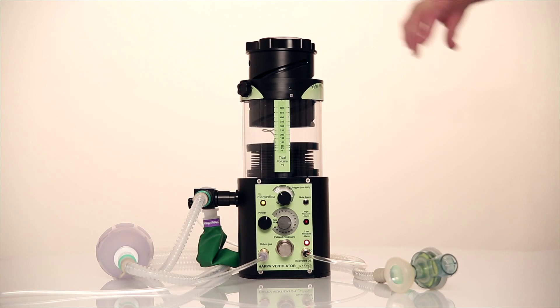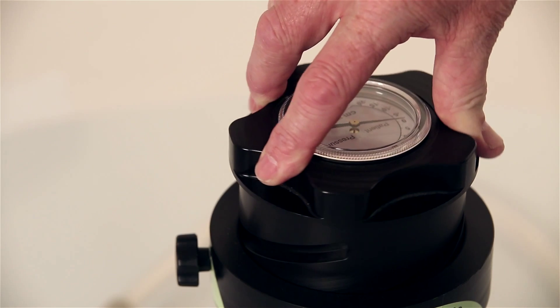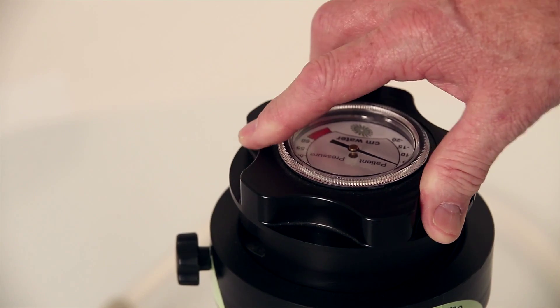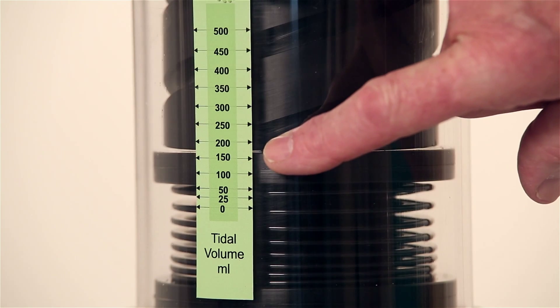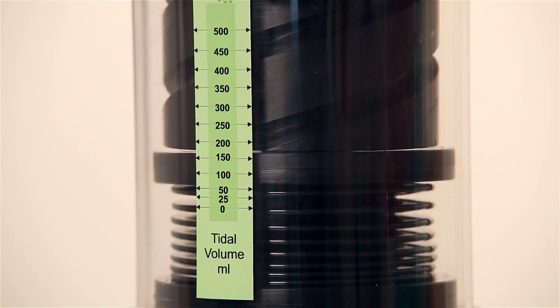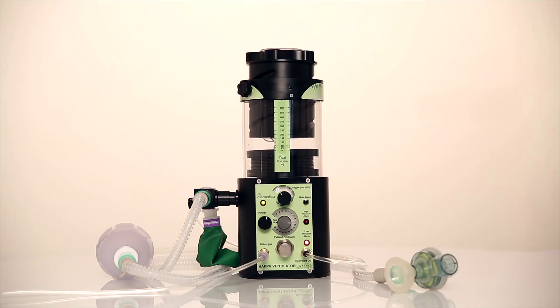The tidal volume is controlled by turning the helix screw on top of the bellows and reading the setting here. It can be used either as a volume generator or in a pressure limited mode depending on the setting of those two parameters.